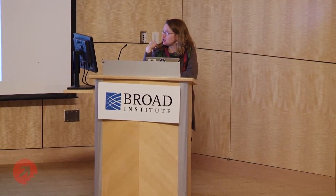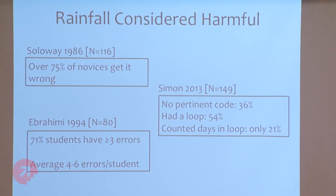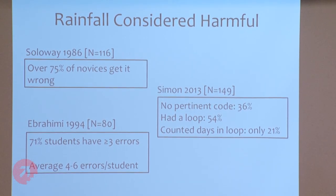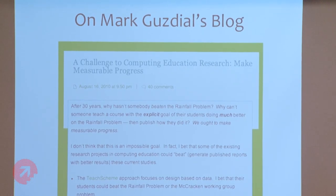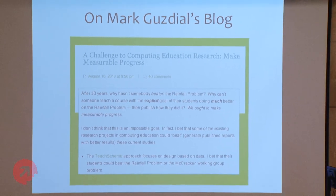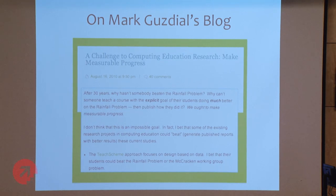Even as recently as 2013, an instructor in Australia gave this to his C++-based intro class, and 36% of them had nothing relevant. At least half of them realized they needed a loop — that must be progress. But only 21% figured out how to count the values in the loop. This should not be this hard of a problem, and yet somehow it is. If you look at the leading blog on computing education, written by a professor at Georgia Tech named Mark Guzdial, in 2010 he put out a challenge to the computing ed research community: after 30 years, why is this problem not done? Why haven't we beaten the rainfall problem? Have we really made this little progress in teaching CS?